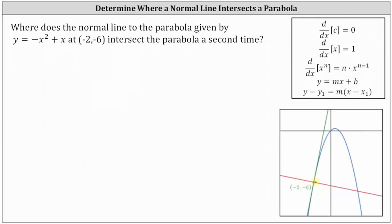So the question is, where does this red normal line intersect the parabola a second time? Meaning, what are the coordinates of this point over here in the fourth quadrant? So what we'll have to do is determine the equation of the normal line and then determine the second point of intersection.